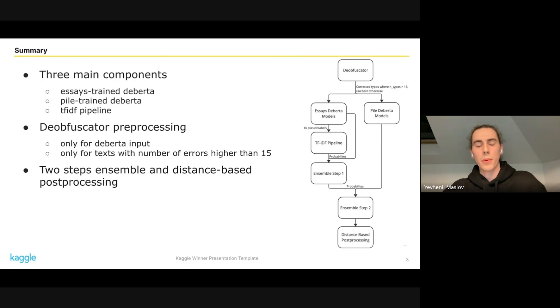We also used DeObfuscator as pre-processing step but only for the data model inputs. After all, we aggregated all probabilities from these components in two steps. First, we aggregated TF-IDF pipeline probabilities with essay models probabilities. Second step is aggregation of first step probabilities and pile data probabilities.